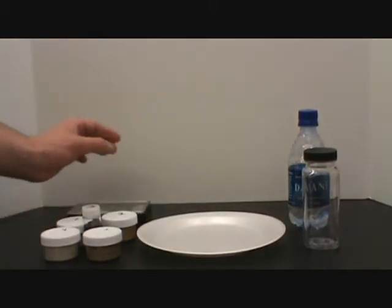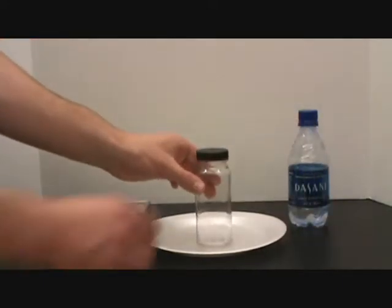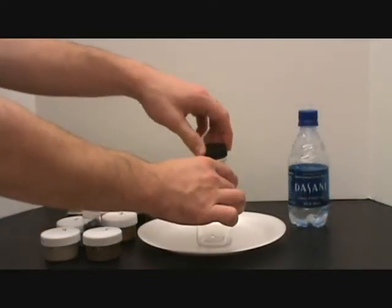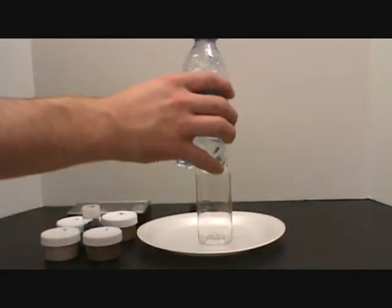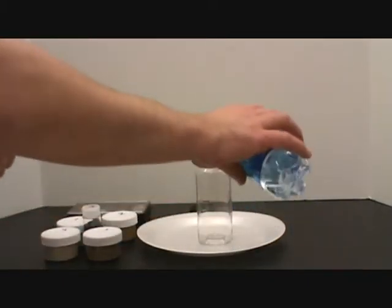Have students follow along with you as you demonstrate in front of the class. Place the empty column on the plate and remove the lid. Pour the contents of the water bottle into the column. It should be about halfway full.